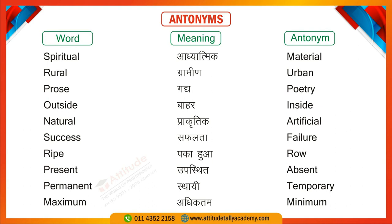Next is 'Natural,' meaning from nature, and 'Artificial,' meaning man-made. You should eat natural fruits and drink natural drinks. Next is 'Success' and its antonym 'Failure.' You will get success in your examination. Failure teaches us many things. Next is 'Ripe,' meaning fully grown or ready to eat, and 'Raw,' meaning uncooked or unripe. For example: It is a ripe banana; it is a raw mango. Then 'Present' means here or attending, and 'Absent' means not present. Next is 'Permanent' and 'Temporary' — our problems are temporary.